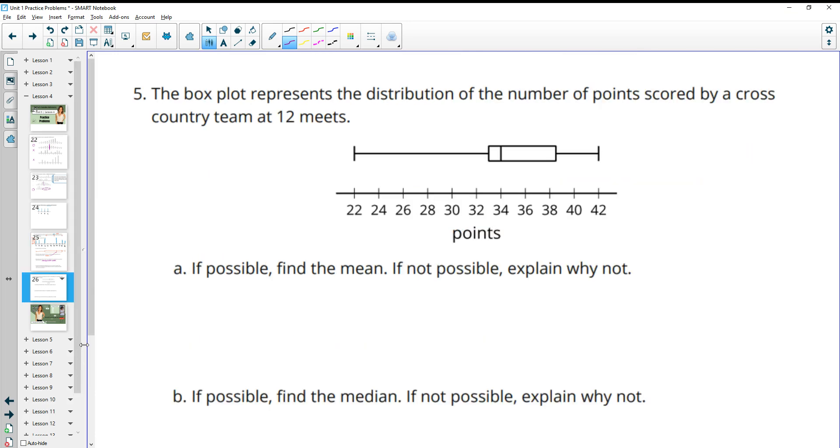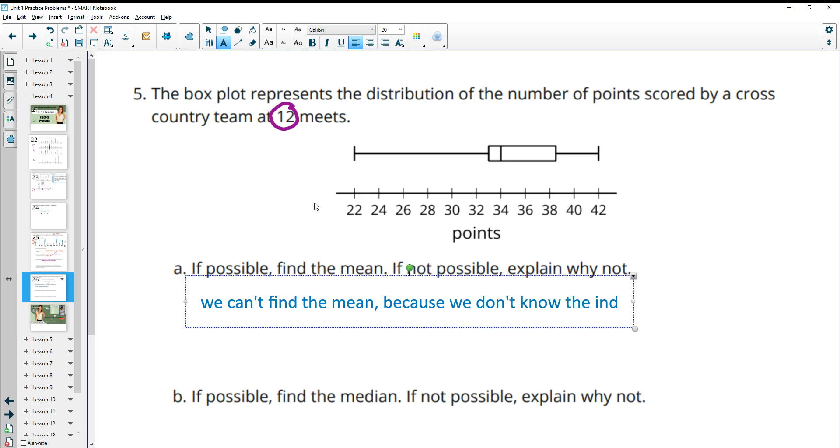Number five, the box plot represents the distribution of the number of points scored by a cross-country team at 12 meets. So this is 12 different meets. Find the, if possible, find the mean. If not possible, explain why not. So we can't find the mean here. And that's because we don't see the individual points. So in order to find the mean, you'd need to add up all the data points and divide by, in this case, 12. But we don't know the individual data points, so we aren't able to calculate that mean.